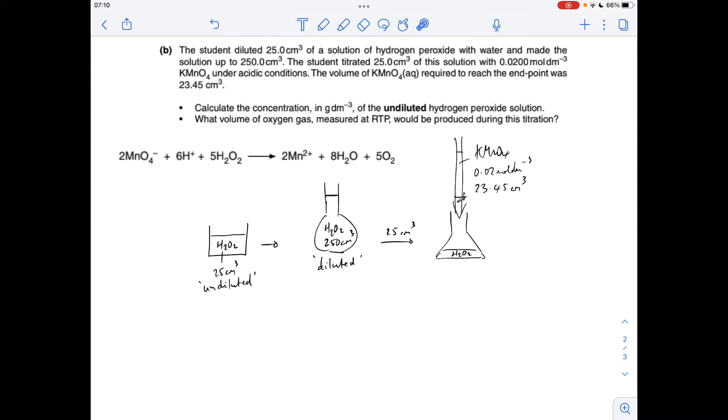Okay, so the first thing we can do is work out the moles of KMnO4 or MnO4 minus ions that's been involved in the titration. So that's just concentration times volume in decimeters cubed, 4.69 times 10 to the minus 4.